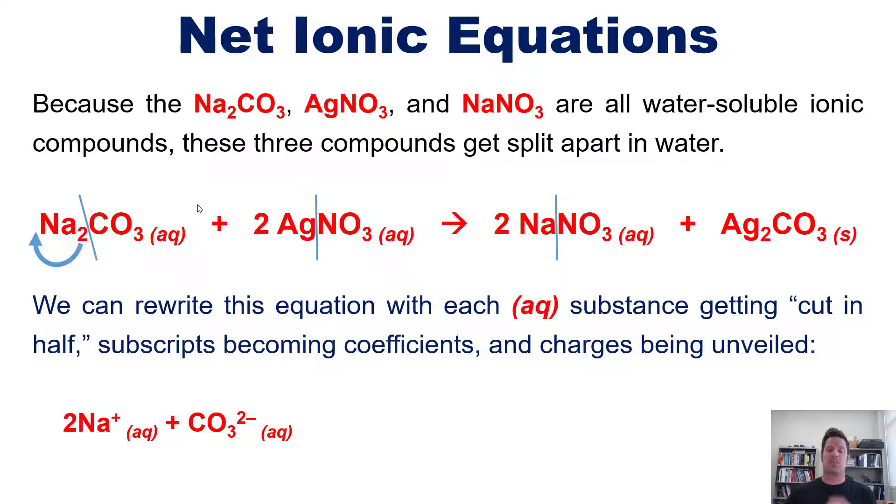Again, for polyatomic ions, I just look at that 3 as being an intrinsic part of the CO3 group. Don't treat it as a subscript. A CO3 is just one lump. CO3. Okay? So, the only thing that happens is that the CO3's charge gets unveiled as a 2 minus, and we write AQ next to both of these. Does that make sense?